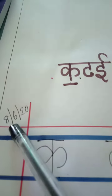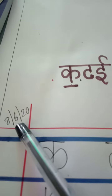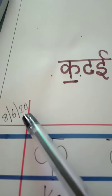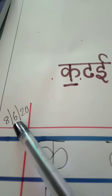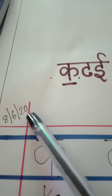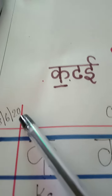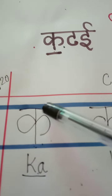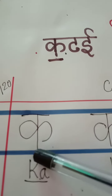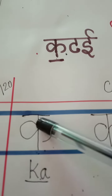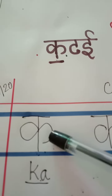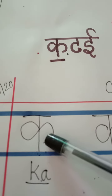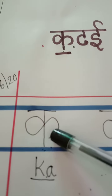The date is 8th. The month is the 6th month of the year, that is June, and the year is 2020. Today we are going to learn to write the letter K. Write a straight line first — and this is your K. You must also learn in English how to spell K.